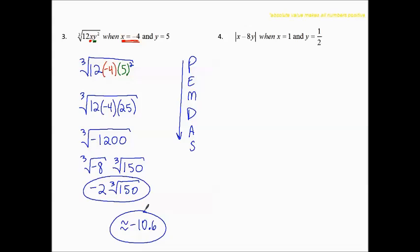Number 4: the absolute value of x - 8y when x equals 1 and y equals 1/2. Now it's important to know what absolute value means. The absolute value of a number is always positive. So for example, the absolute value of -3 will be positive 3, but the absolute value of positive 3 will also be positive 3. The absolute value makes the numbers positive.